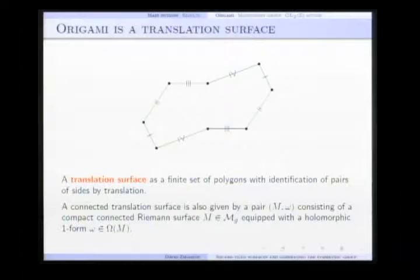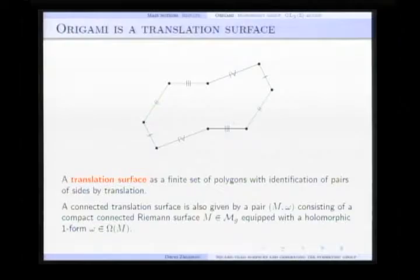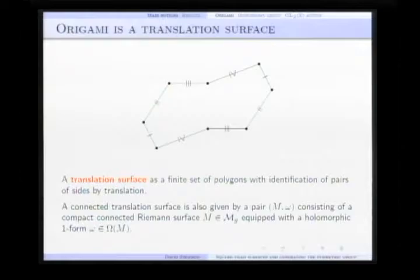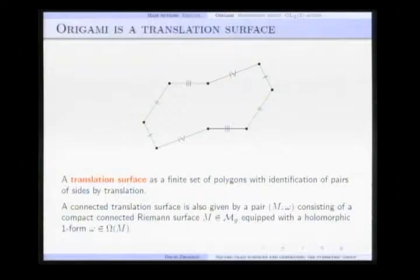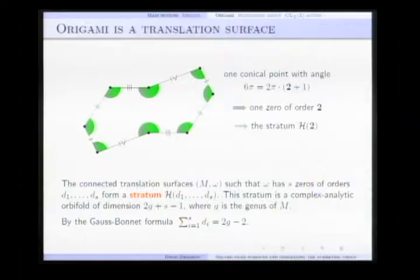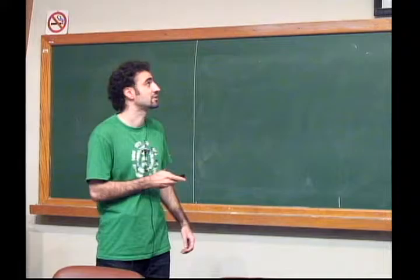An origami is a particular case of translation surfaces. A translation surface is a finite set of polygons with identifications of pairs of sides by translation. For the squares in the previous definition, the sides are glued as well by translation. A connected translation surface is also given by a pair of a compact connected Riemann surface and a holomorphic one-form.